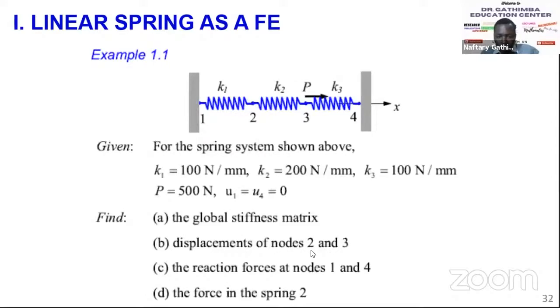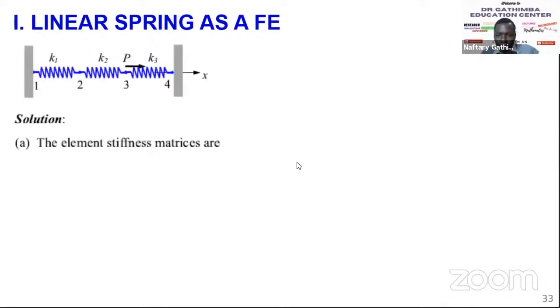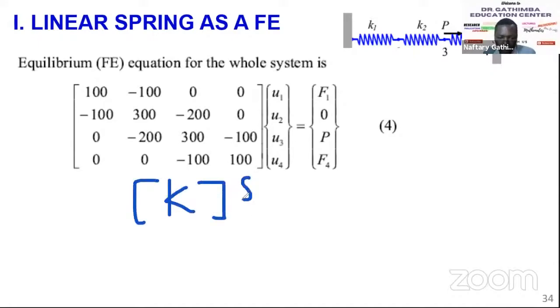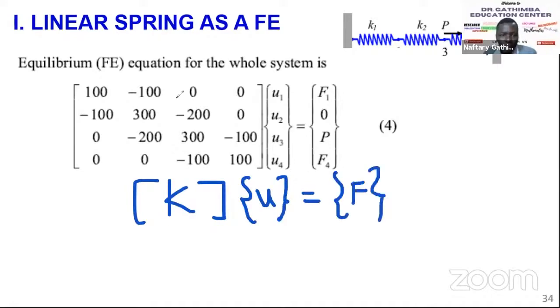Now that we have the global stiffness matrix, we can write the global finite element equation, which is the same as the equilibrium equation: [K]{u} = {F}. We introduce the nodal displacement vector and the nodal force vector. Using boundary conditions, we substitute: F1 is the unknown reaction at node 1, F2 and F3 are applied forces, and F4 is the reaction at node 4.